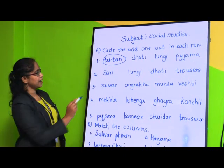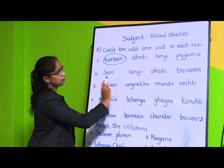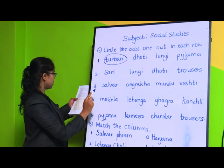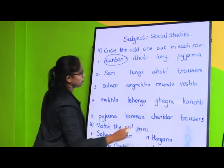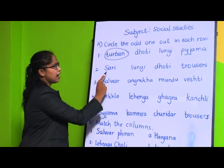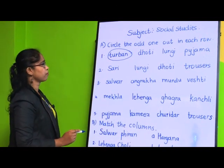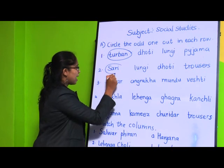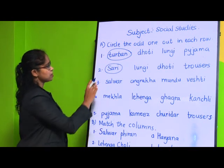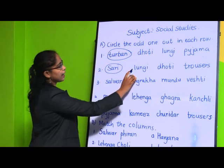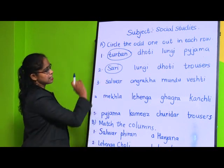Second question: Sari, lungi, dhoti, trouser. Sari will be the answer - you have to circle sari. Why? Because sari is worn by women and lungi, dhoti, and trousers are worn by men. That's why the answer is sari.